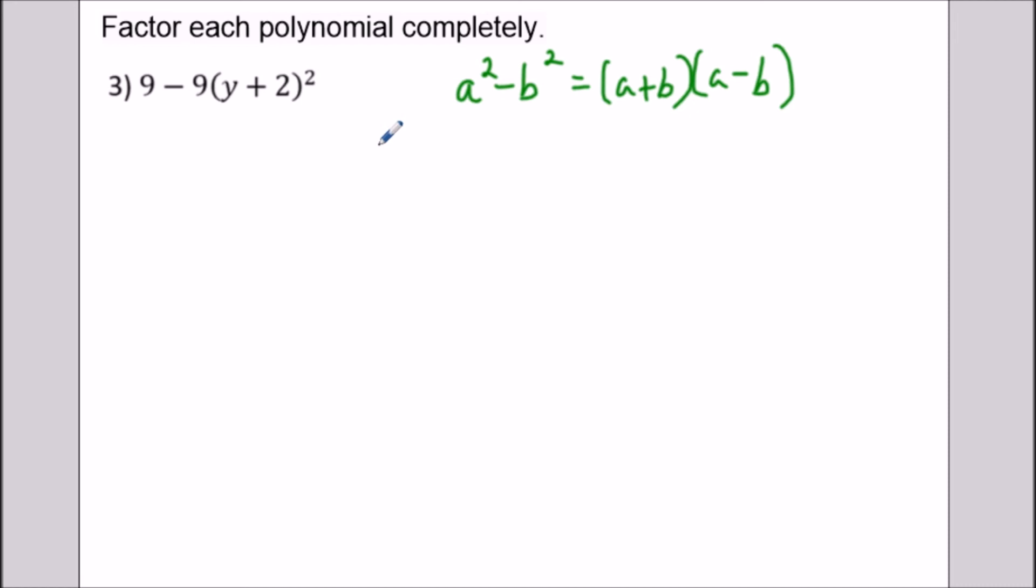We'll start off by factoring out a greatest common factor. So we have 9(1 - (y + 2)²). But if we write it this way, it's very subtle. But in this case, if we use the difference of two squares formula, you could think of this as just 1². a is going to be equal to 1. And in this case, b is going to be equal to y + 2. So in this case, if you see if we were to plug in, I have 1² - (y + 2)² squared, it matches what we have on the inside.